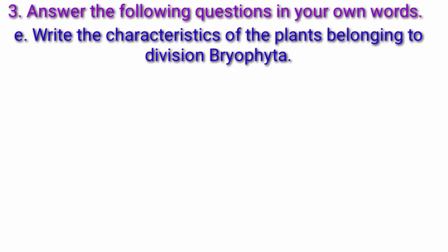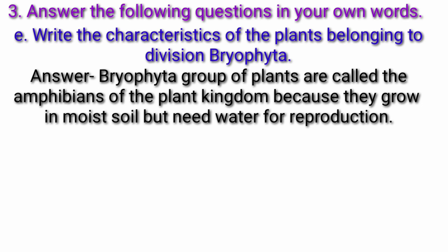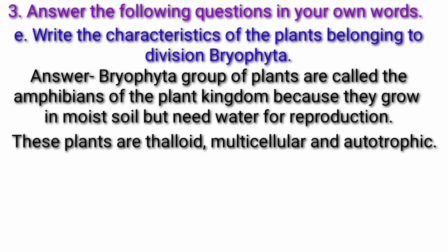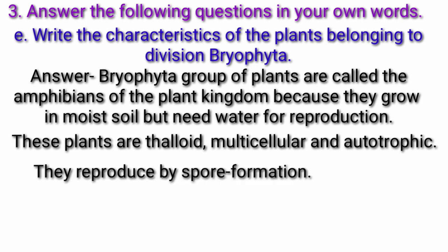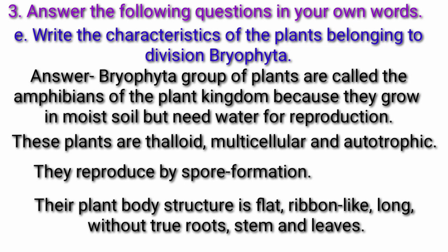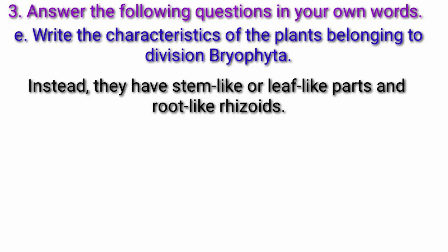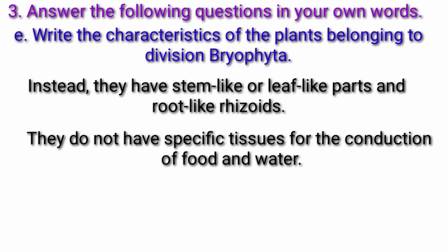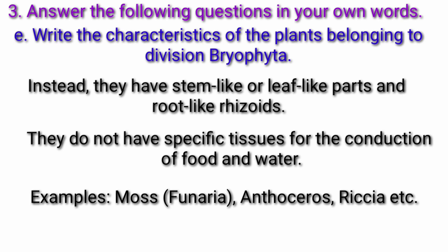Question E: Write the characteristics of the plants belonging to division Bryophyta. Answer: Bryophyta plants are called the amphibians of the plant kingdom because they grow in moist soil but need water for reproduction. These plants are thaloid, multicellular and autotrophic. They reproduce by spore formation. Their plant body structure is flat, ribbon-like and long, without true roots, stem and leaves. Instead, they have stem-like or leaf-like parts and root-like rhizoids. They do not have specific tissues for the conduction of food and water. Examples: Moss, Anthoceros, Riccia, etc.